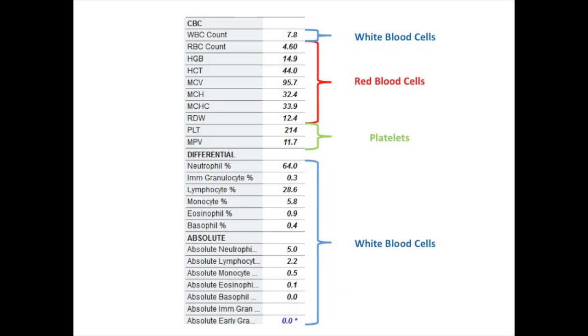When you first review your CBC results, it can be overwhelming given the number of values reported. As mentioned earlier, the CBC measures three categories of cells: red blood cells, white blood cells, and platelets.